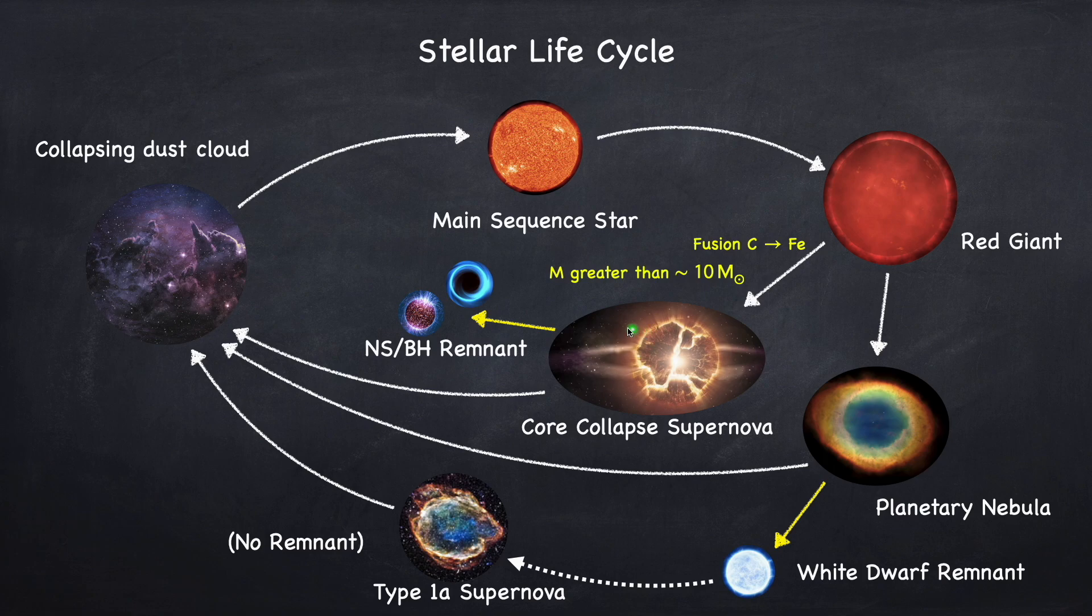This will leave behind a core remnant of either a black hole or a neutron star. If the star is below about 20 to 25 solar masses you'll get a neutron star. Above that you typically get a black hole. So broadly speaking stars with mass between 10 to 20 or 25 solar masses will form a neutron star.